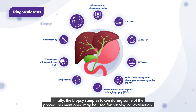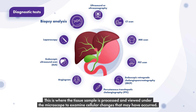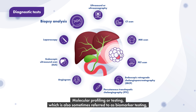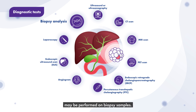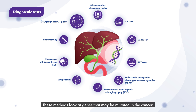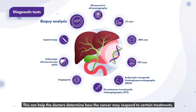Finally, the biopsy samples taken during some of the procedures mentioned may be used for histological evaluation. This is where the tissue sample is processed and viewed under the microscope to examine cellular changes that may have occurred. Molecular profiling or testing, which is also sometimes referred to as biomarker testing, may be performed on these biopsy samples. These methods look at genes that may be mutated in the cancer, which can help the doctors determine how the cancer may respond to certain treatments.